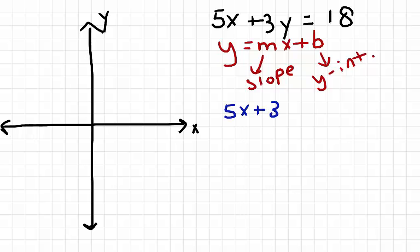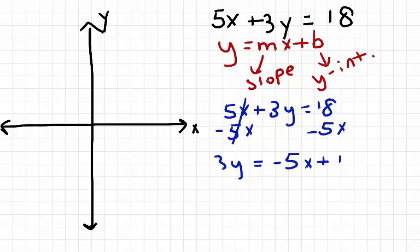We have 5x plus 3y equals 18. Since I'm solving for y, I'll begin by subtracting 5x from both sides. Now I have 3y equals negative 5x plus 18.